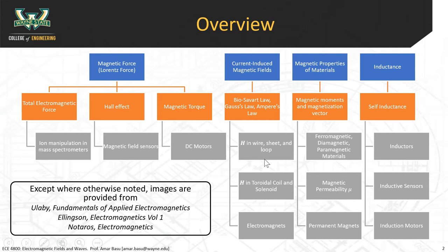We'll also talk about magnetic torque, originating from the Lorentz force. Torque is a key element of electric motors, which we'll discuss in the context of electric vehicles. On the next day's lecture, we'll talk about current-induced magnetic fields. If you run current through a wire, you can generate a magnetic field. There are several ways to calculate what that magnetic field is: the Biot-Savart law, Gauss's law, Ampere's law, and sometimes a combination of these three laws.